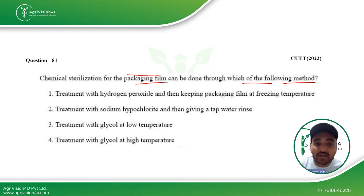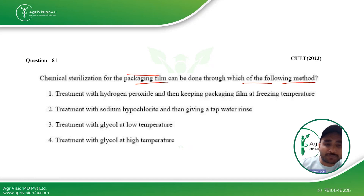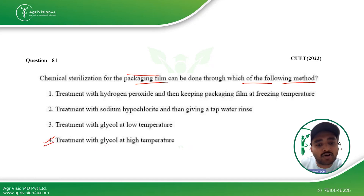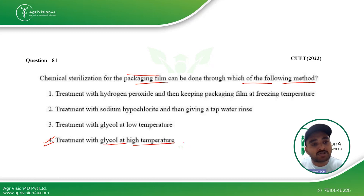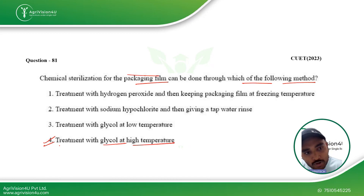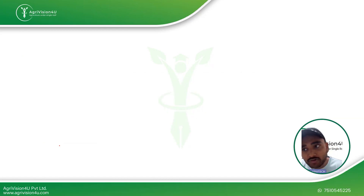So before packaging the food material, we go for sterilization of the packaging so that it does not have any microbes or chemical residues on its surface. The right option is treatment with glycol at high temperature, which is the most commercially and economically safe method used in industry. The fourth option is the right answer for this question.